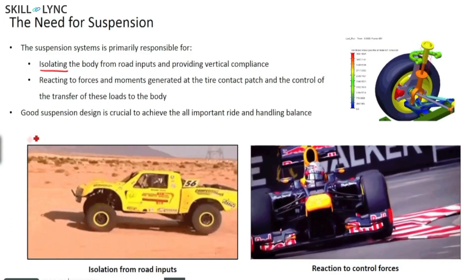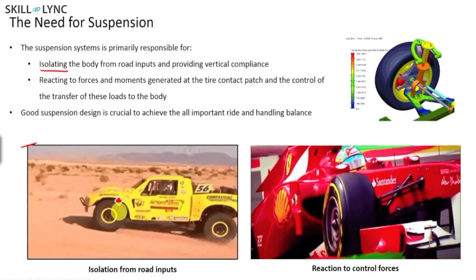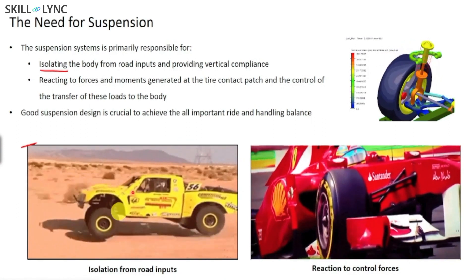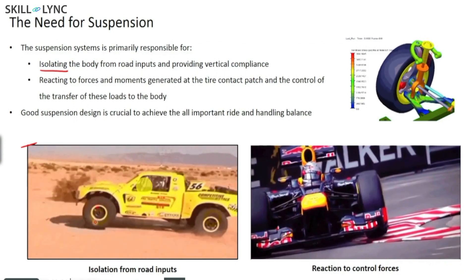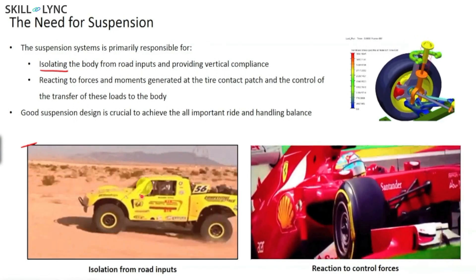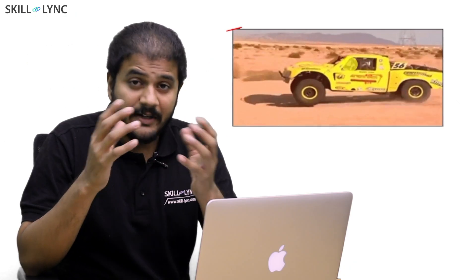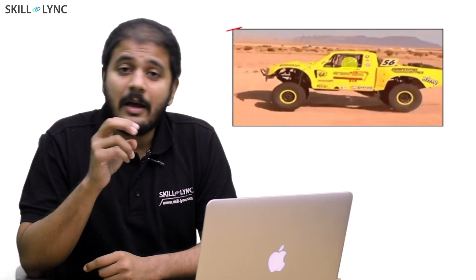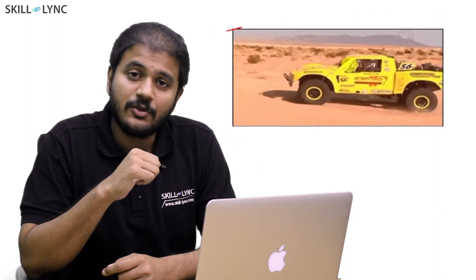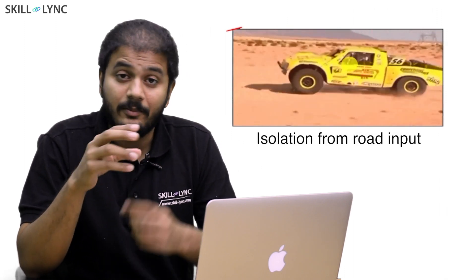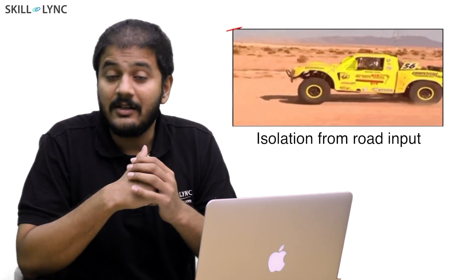The first job of the suspension system is to basically isolate from the road inputs. You can clearly see that in this case the terrain is pretty rough and the wheels are actually moving up and down quite crazily, but the driver is relatively steady. All of this happens because of the suspension system, which provides isolation from road inputs and vertical compliance.